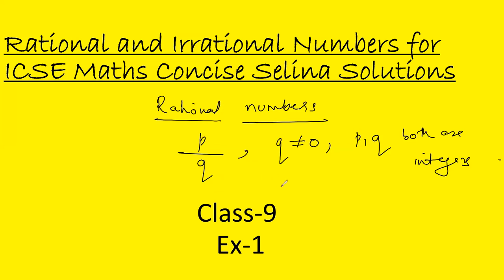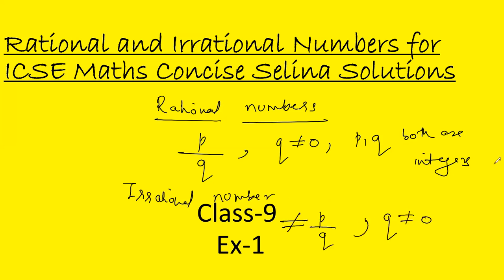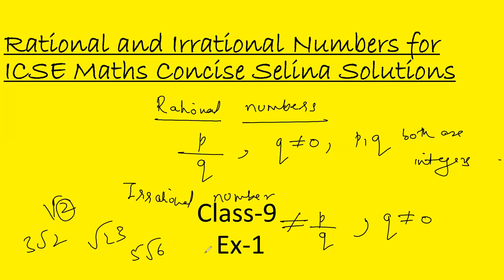Integers include positive numbers, negative numbers, and 0. Irrational numbers are those which are not in the form of p by q. Any irrational number you encounter will be under a root sign — for example, root 2, root 23, 3 root 2, or 5 root 6. These are irrational numbers, not expressible as p by q. That's the short description of rational and irrational numbers; now let's move to the questions.